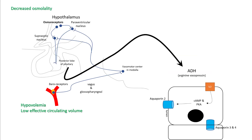In the previous lecture you learned that decreased osmolality and low effective circulating volume were two of the stimuli for secretion of ADH, which works on the collecting ducts and forms aquaporin-2 molecules into the lumen and aids in absorption of free water.